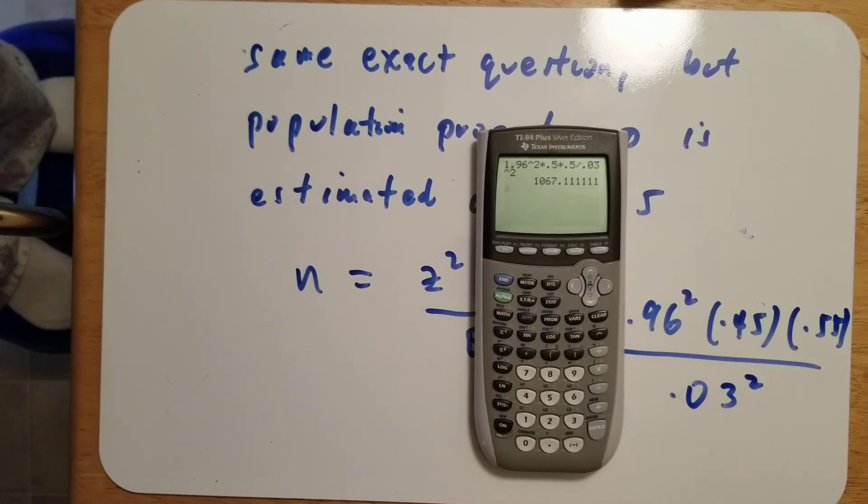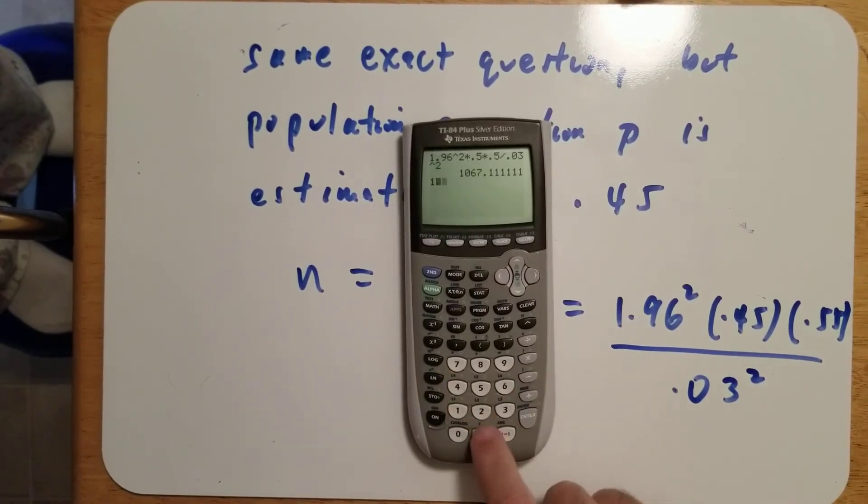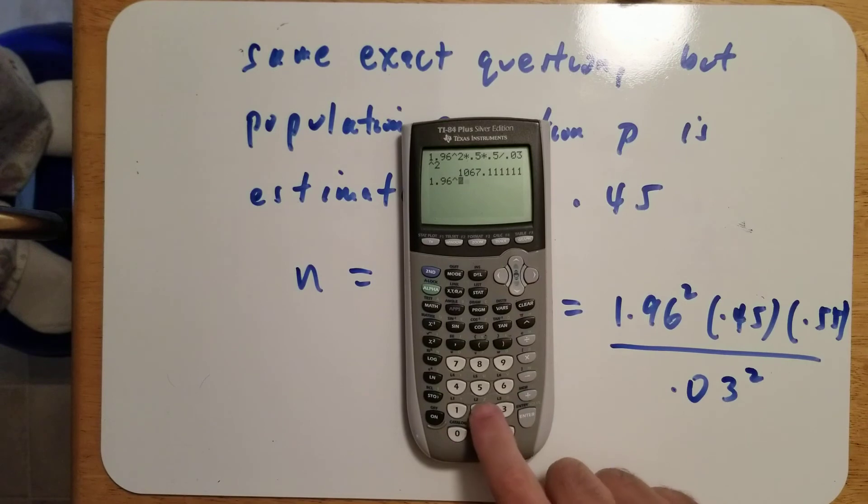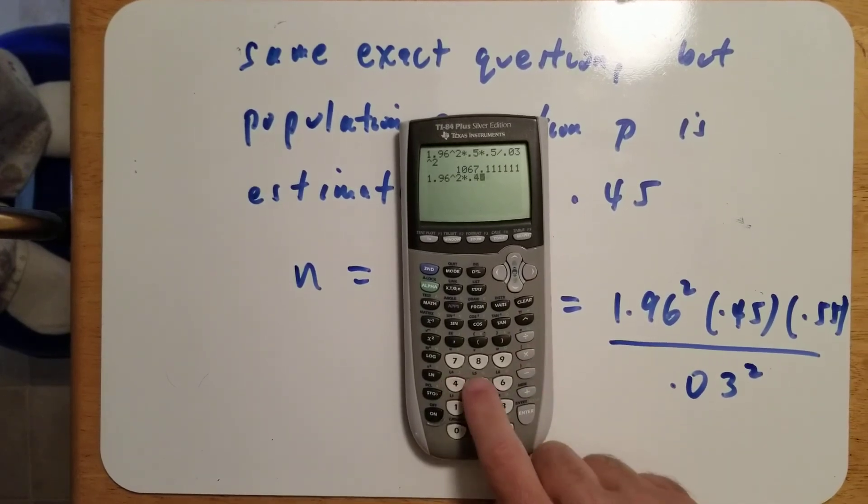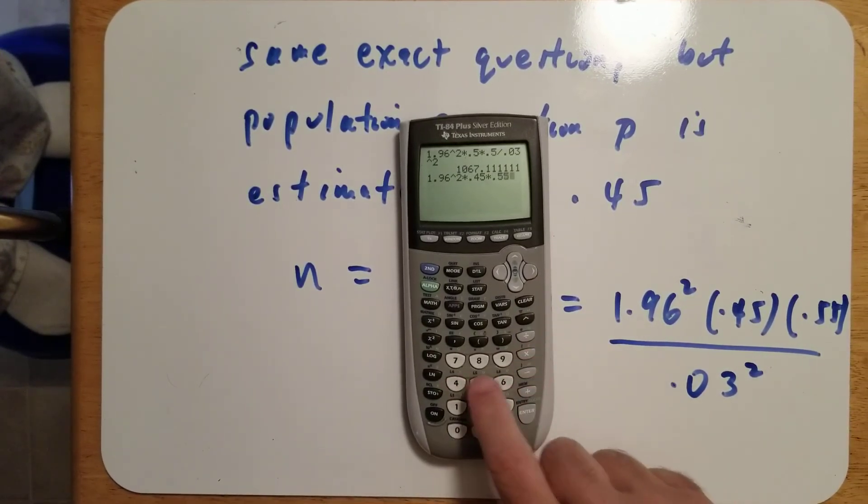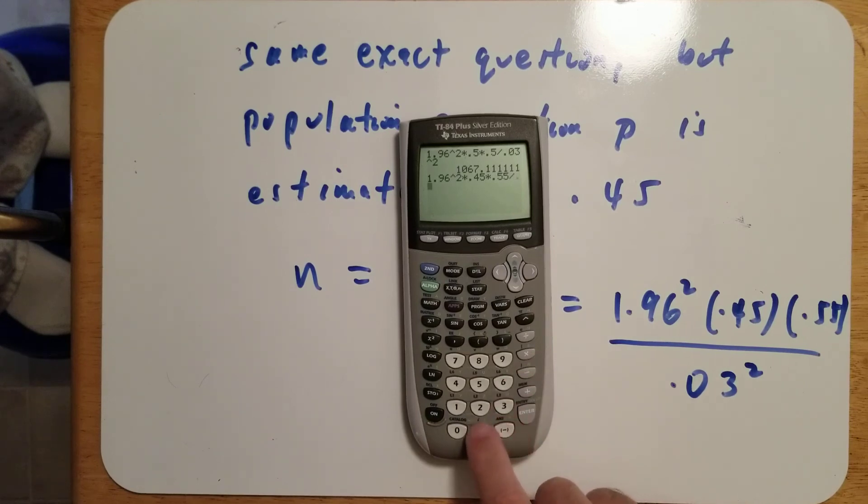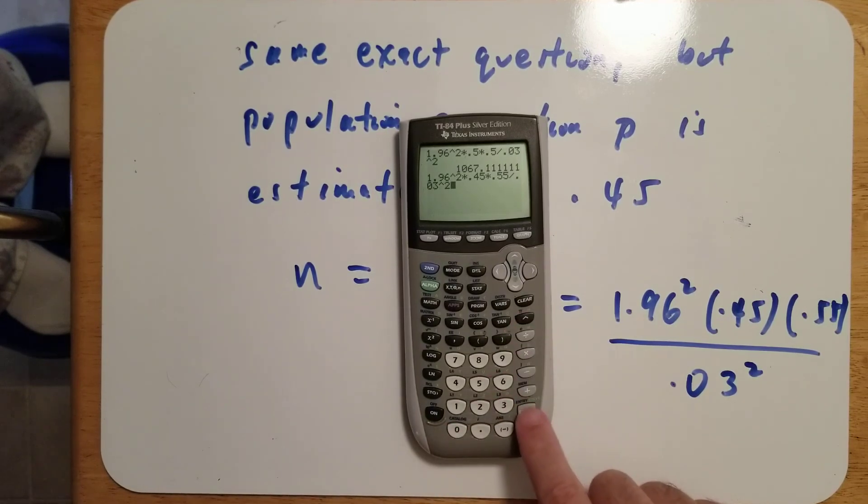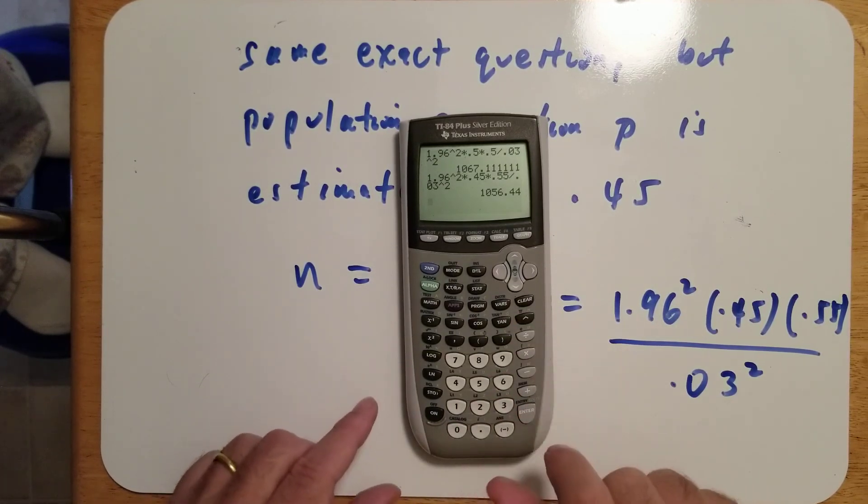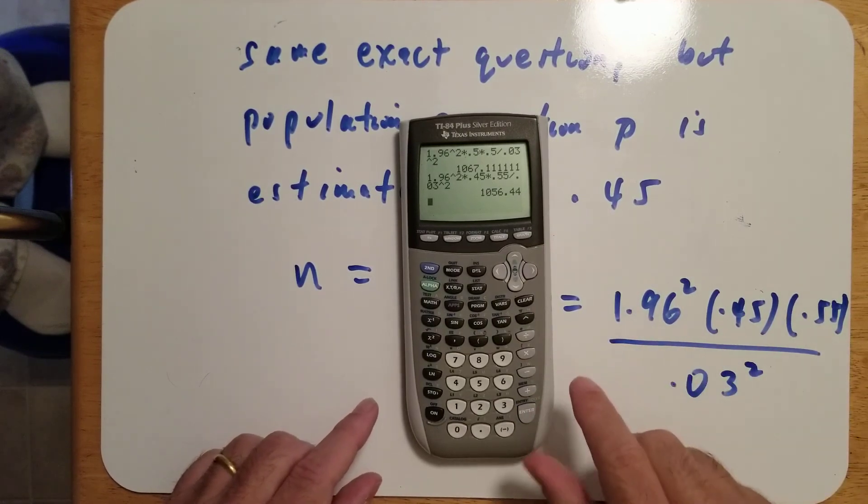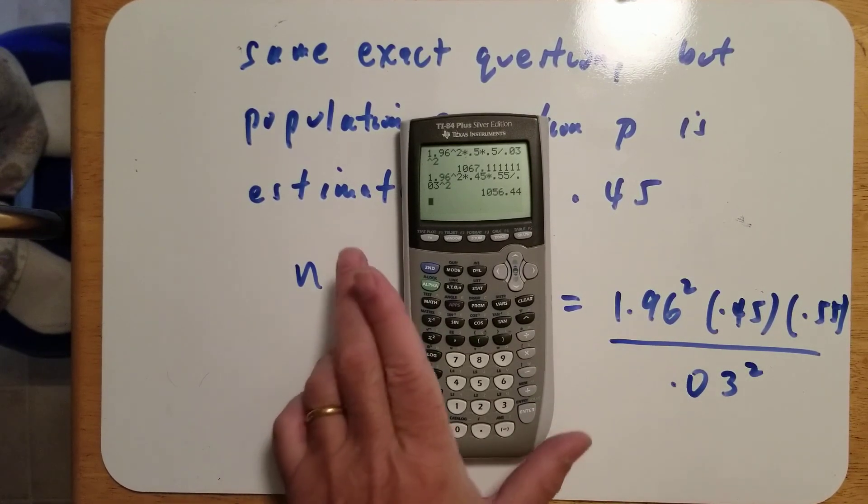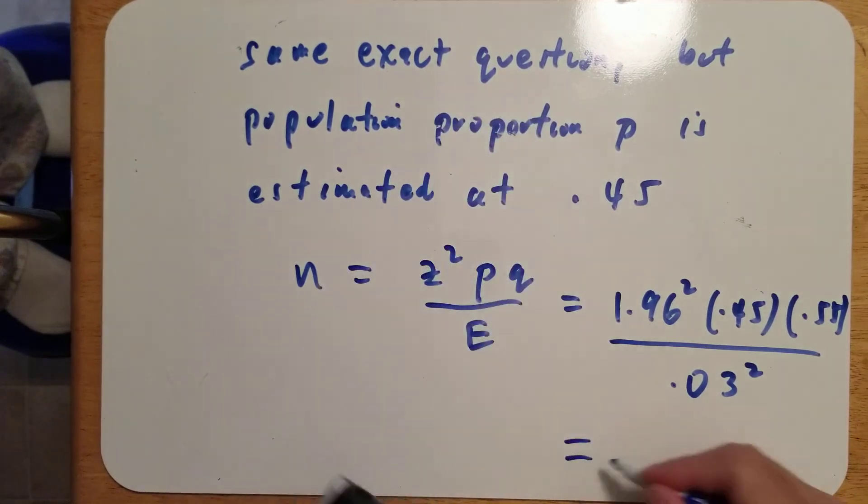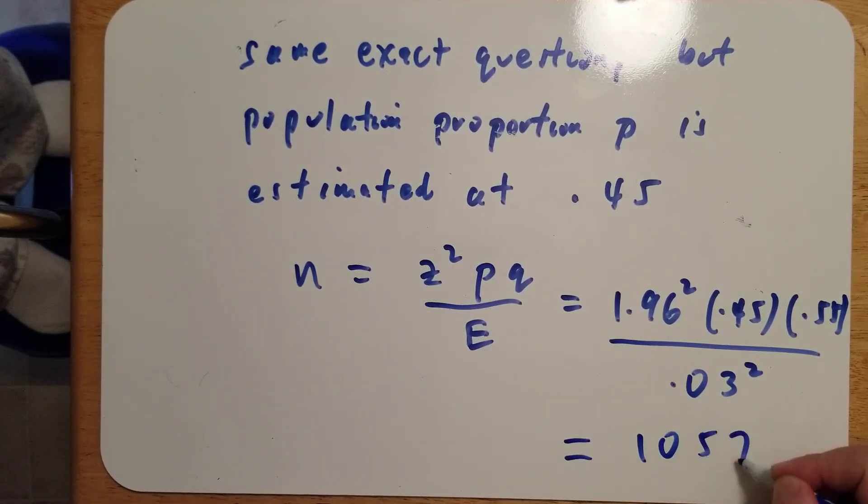The calculator gives 1.96 squared times 0.45 times 0.55 divided by 0.03 squared, which is 1056.44. Again, we always round up to the next higher integer. So the answer is 1057.